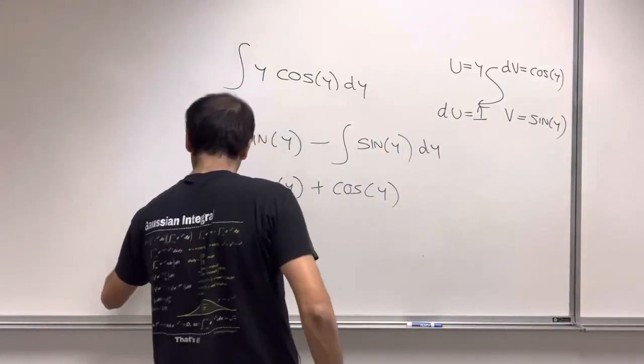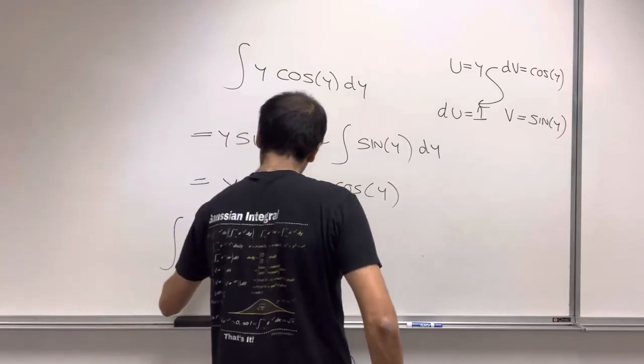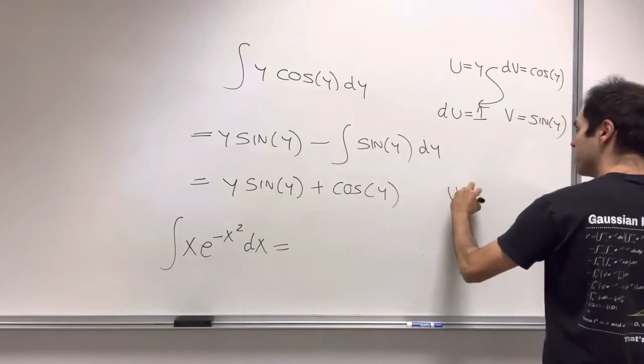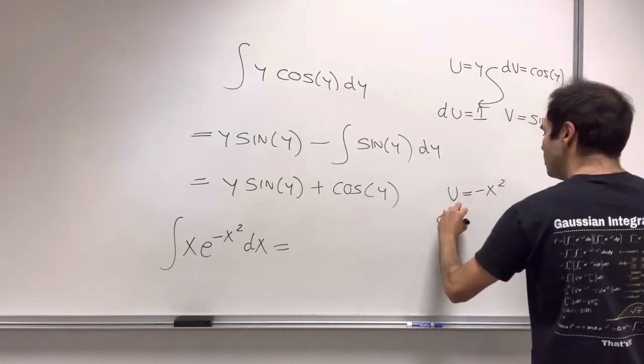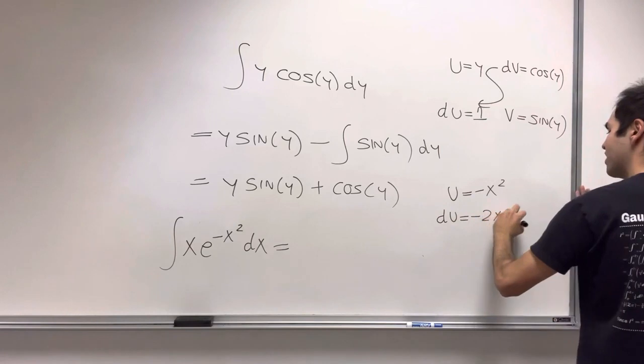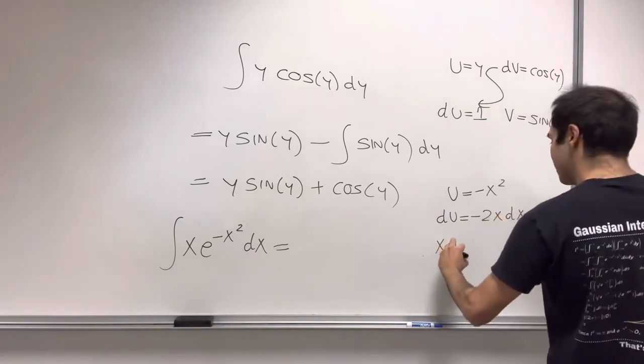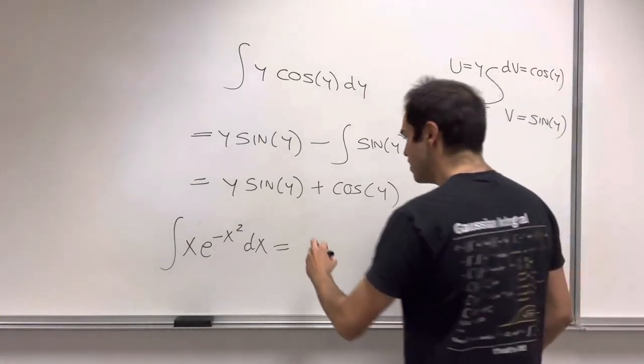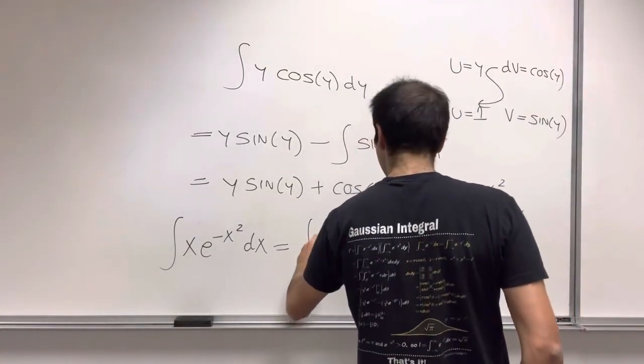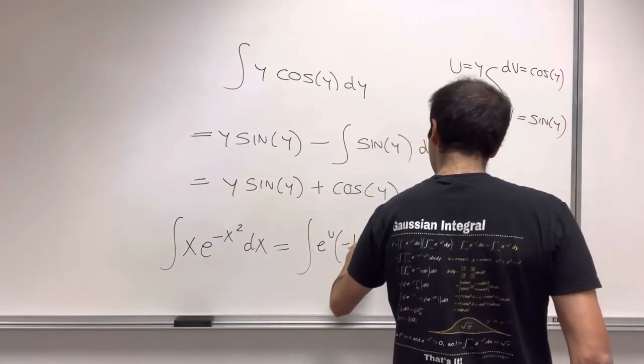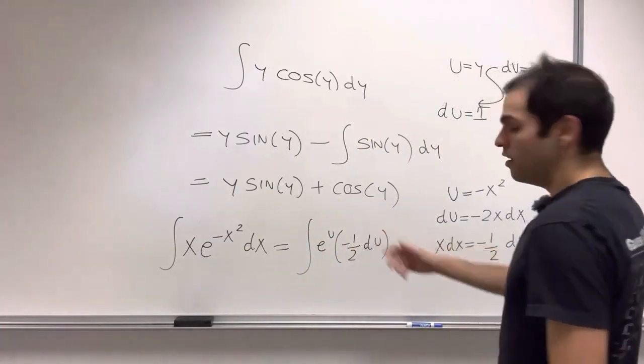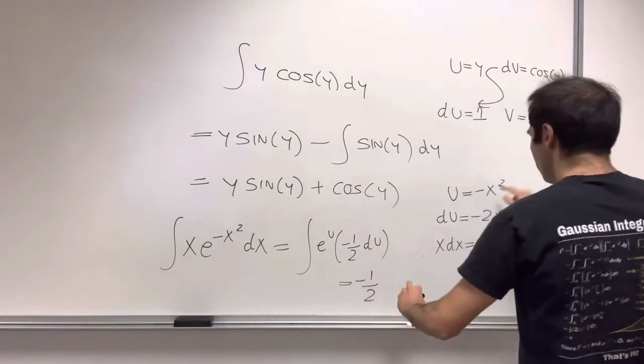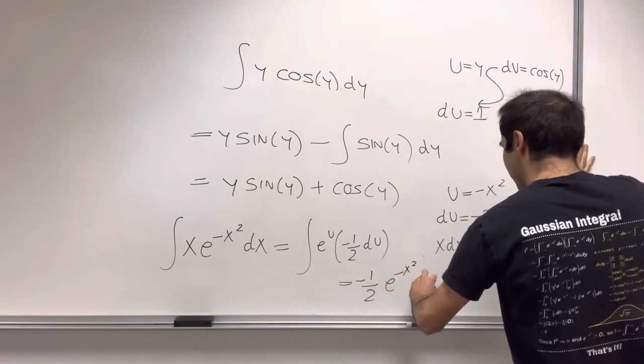integral x e to the minus x squared dx. Well, in that case, u is minus x squared, du is minus 2x dx. So x dx, it's minus 1 half du. So this becomes integral of e to the u minus 1 half du, which then becomes minus 1 half e to the u. So e to the minus x squared plus a constant.